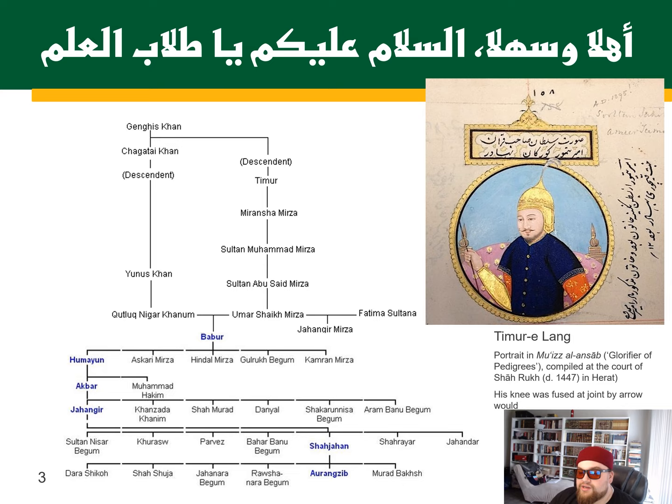We are going to talk about the Safavids, Ottomans, and Mughals, who are all directly related to the Ottoman Empire in some way, shape, or form. And in the case of the Mughals, they are direct descendants — direct lineage — of Genghis Khan.